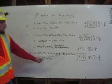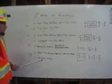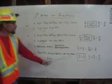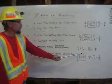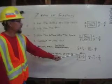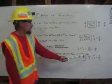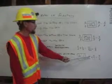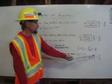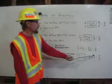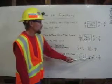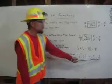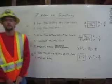Division: turn the second fraction upside down, then multiply across. One-half divided by one-fourth — turn the second fraction upside down. One times four equals four, two times one equals two. One-half divided by one-fourth equals four-halves.